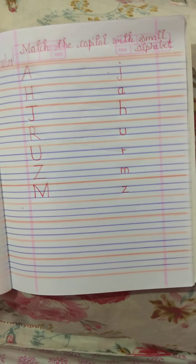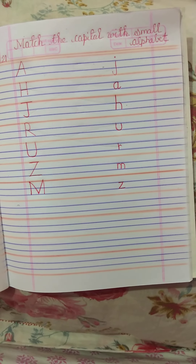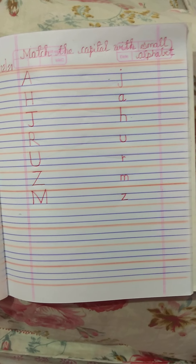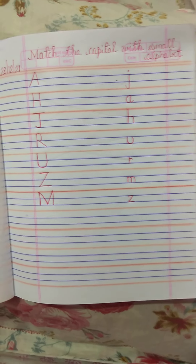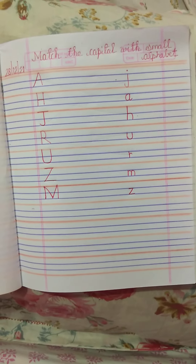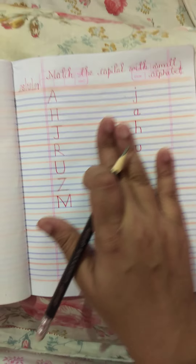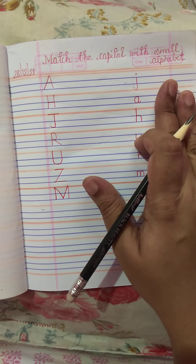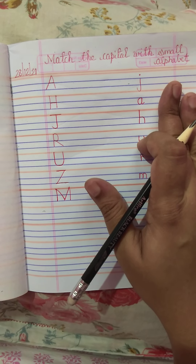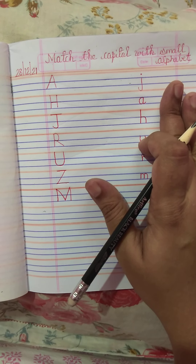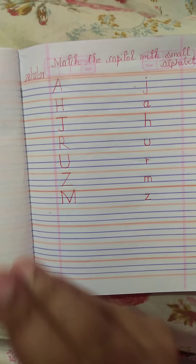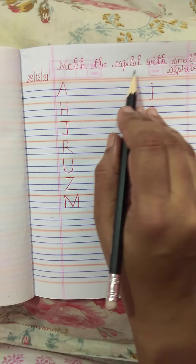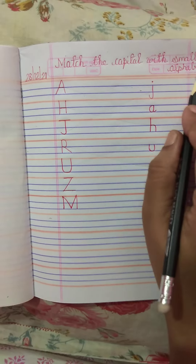Good morning children, how are you all today? I hope you all are safe at home. Right children, welcome back to English class. Okay children, now quickly get your English notebook, sharpened pencil and your eraser. Today we are going to learn about matching the capital with small alphabet.